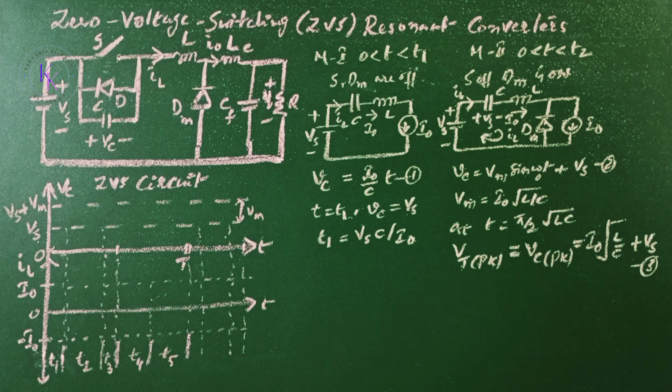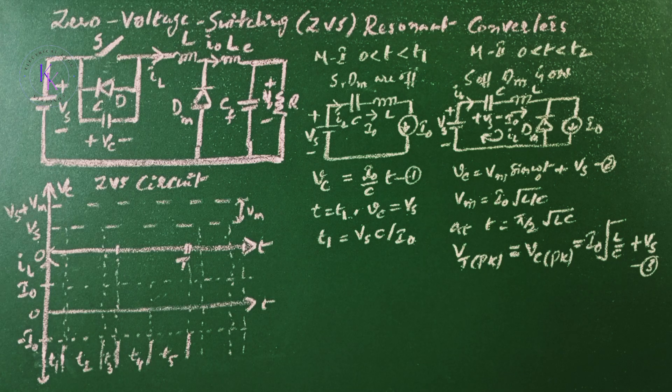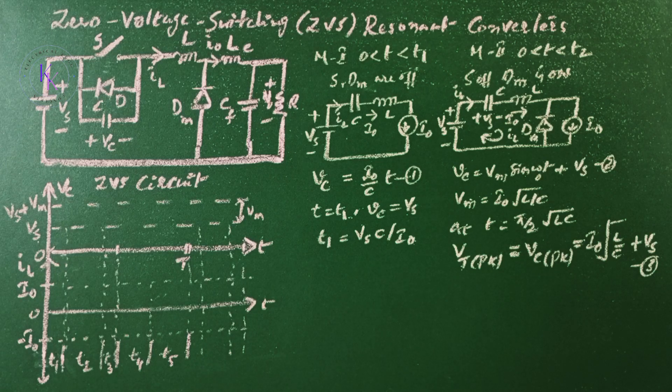The equation shows that the peak switching voltage is dependent on the load current. Therefore, a wide variation in the load current will result in wide variation of switch voltage. For this reason, the ZVS converters are used only for constant load applications.